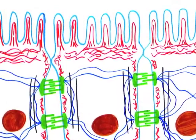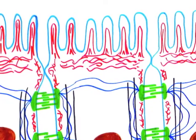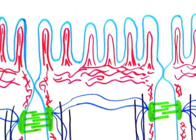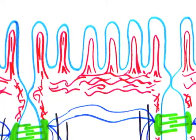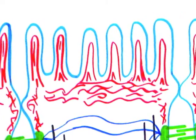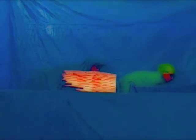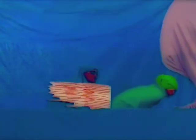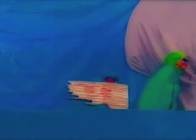One role that actin filaments perform at the cellular level is to form microvilli in the intestinal lumen that increase the cell surface area available for absorbing nutrients from food. The bacteria Listeria monocytogenes can invade epithelial cells and hijack actin by recruiting its accessory proteins to incite subunit polymerization adjacent to the bacterium, thus moving it within and between epithelial cells.